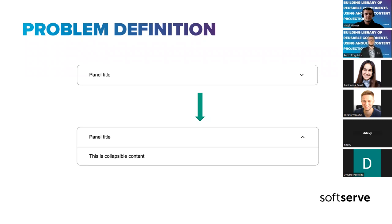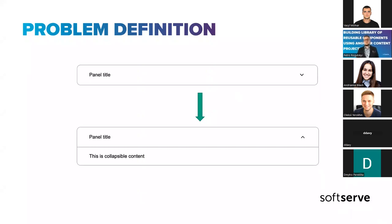You might be thinking that this situation is rare and only cool guys that build Angular Material or ng-bootstrap libraries face such problems. But that's not really true, because in our project we do have our own library of components shared through the whole system — things like buttons, snack bars, status bars, inputs, collapse panels, accordions.